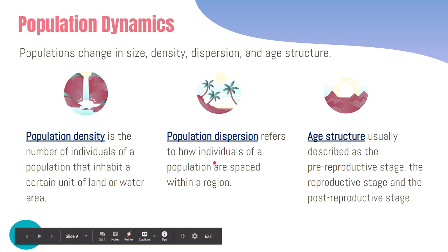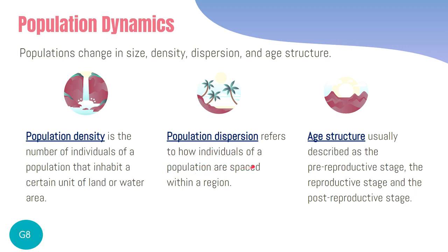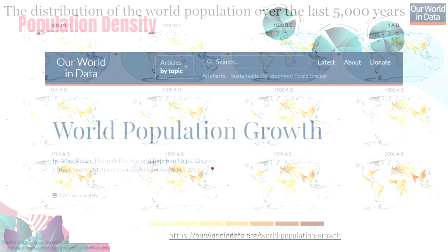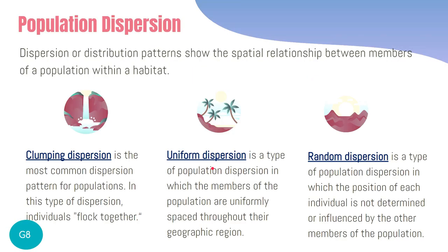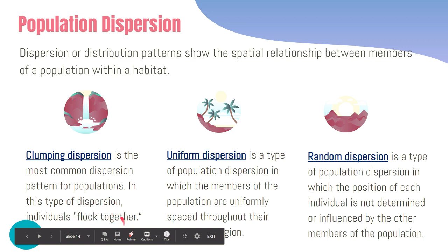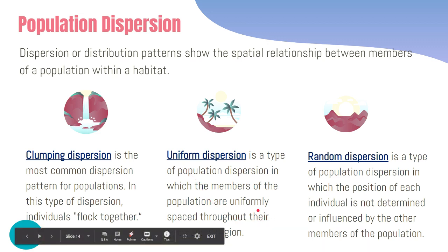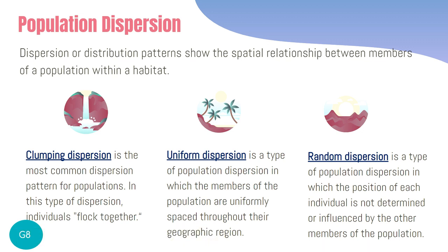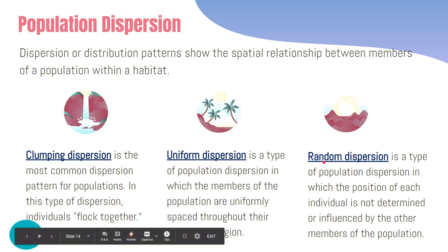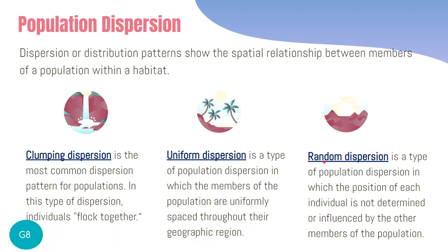The next concept is population dispersion, which tells us how individuals of a population are spaced within a region. There are three major types: clumping dispersion, where organisms tend to flock together — this is the most common pattern. Uniform dispersion, where organisms are equally spaced throughout the region. And random dispersion, where they do not follow any pattern and simply grow wherever conditions allow survival.